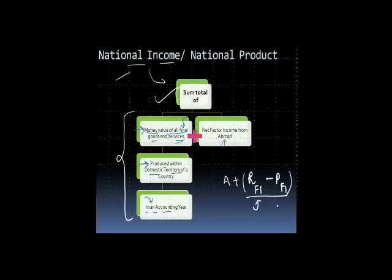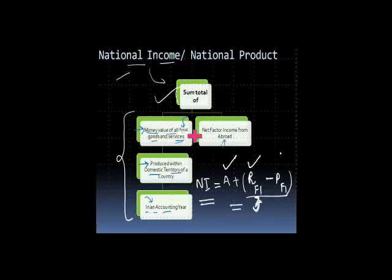When you do a sum total of all this, you get national income. Just take the value of all the goods and services produced in a country in a year. To that, add whatever receipts made by the residents of a country for allowing the use of factors of production from outside people, and reduce the payments made by the people of a country for the use of factors of production to overseas people. And you will get the national income. I hope this is clear. Thank you for being with us today.